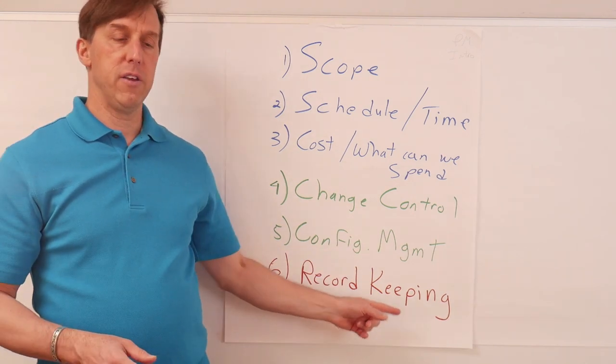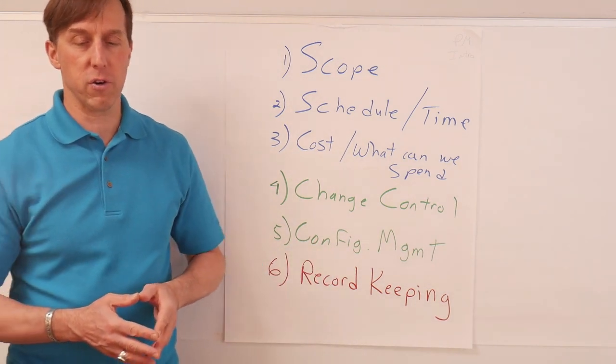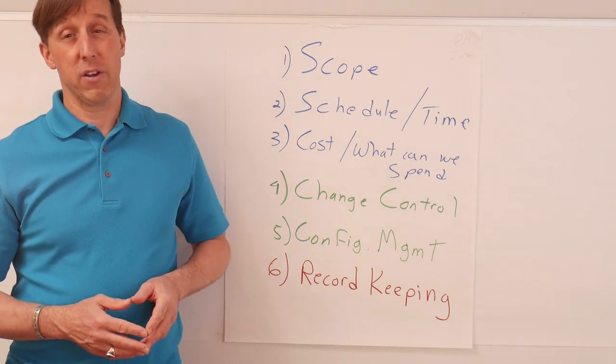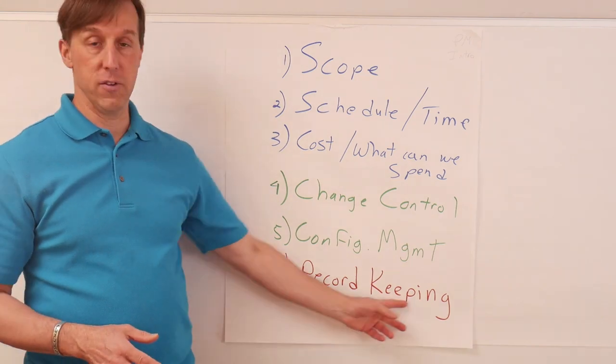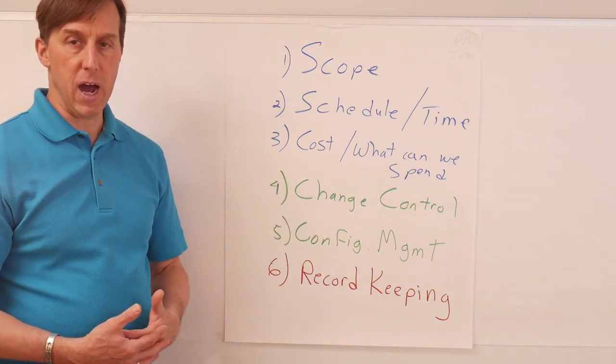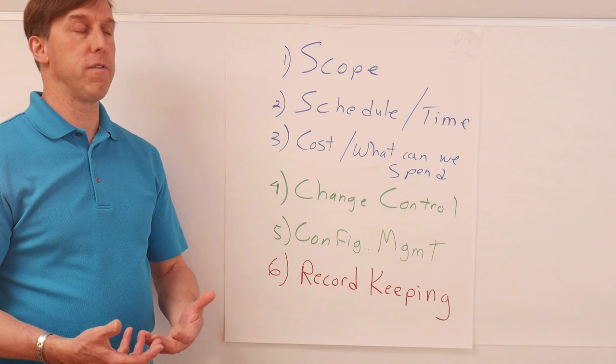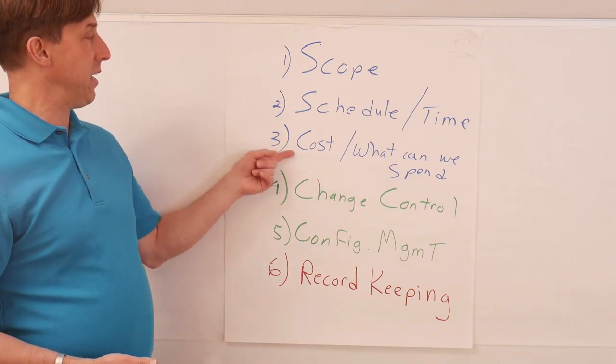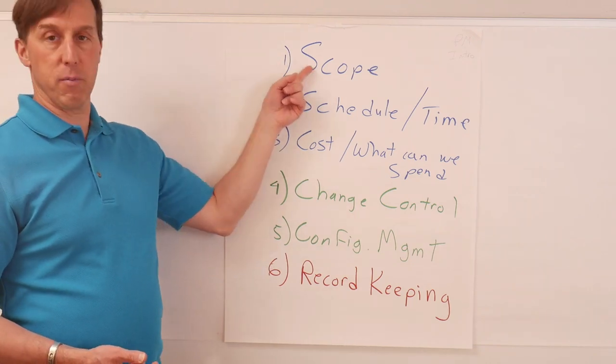Now, the sixth one is a little more common for larger organizations, but really any organization that's publicly held needs to do this. And it's record-keeping. Now, record-keeping is where you formally archive artifacts of spending the money to take time to build a product.